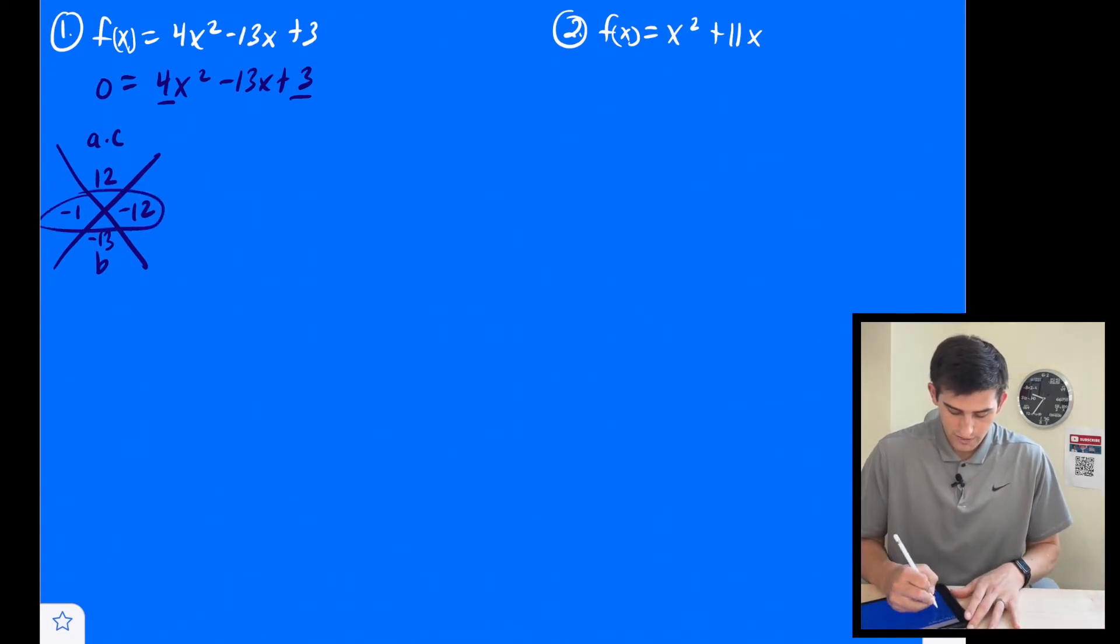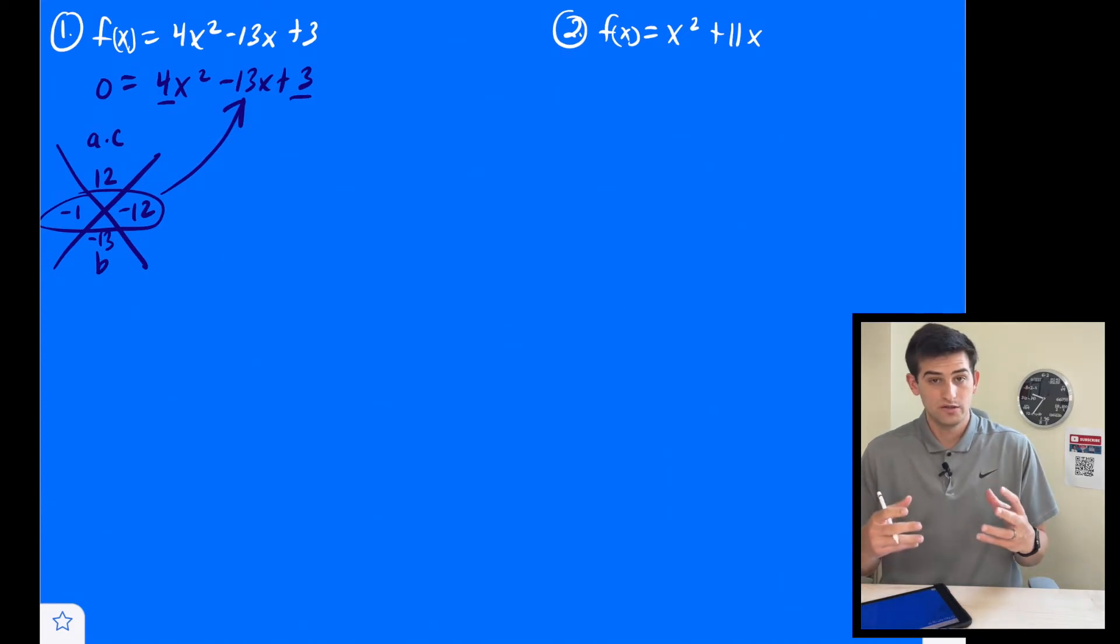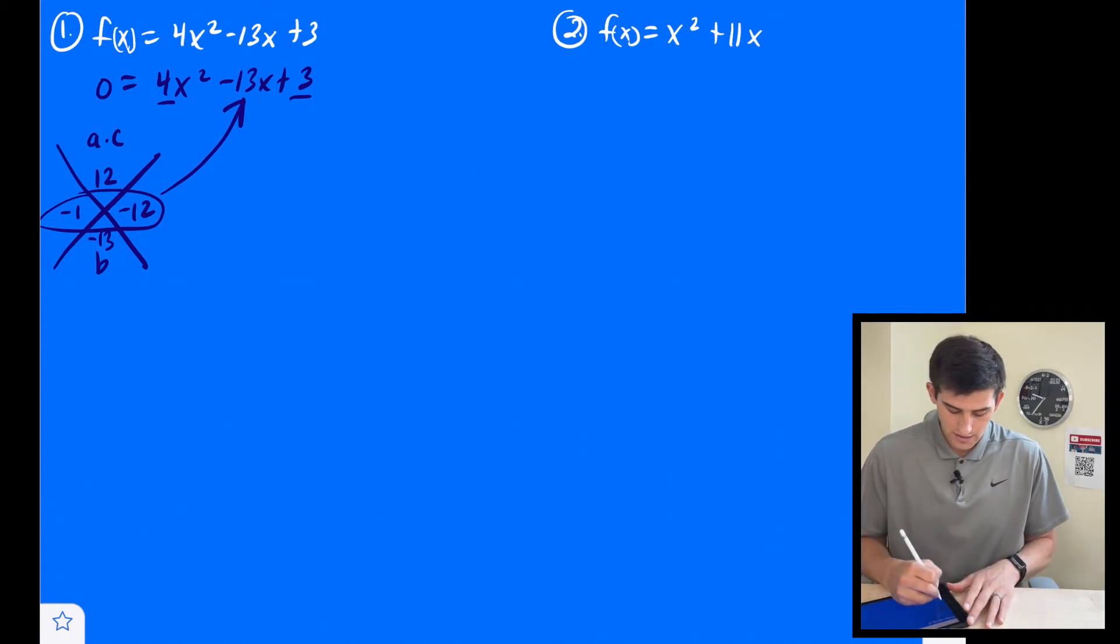So now we're going to factor this by grouping. So we're going to split negative 13x into negative x and negative 12x. And we're going to write it like this, 0 = 4x² - 12x - x + 3.